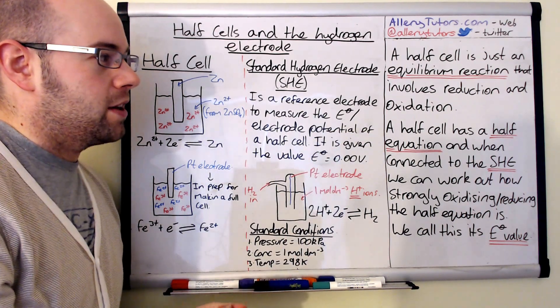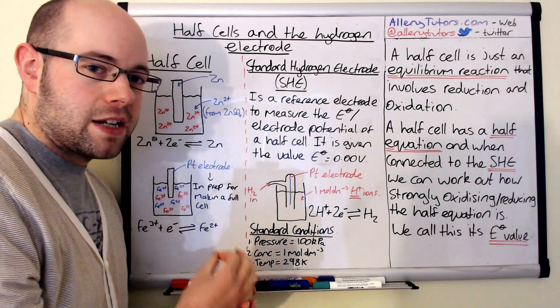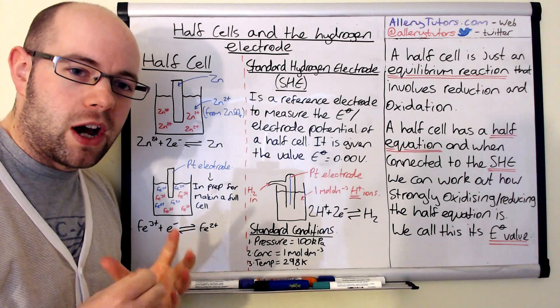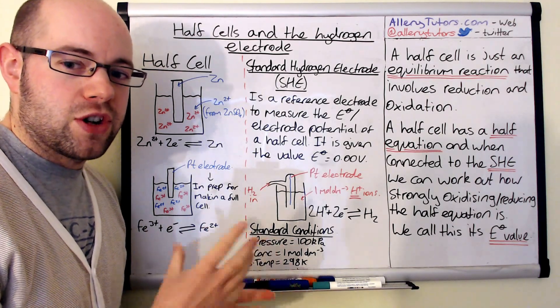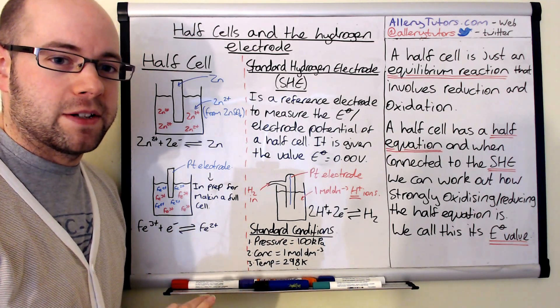Basically a half cell has a half equation. When it's connected to a standard hydrogen electrode, which I'll show you in a minute, we can work out how strongly oxidizing or reducing that actual half equation is. And we can give it what we call an E⁰ value, which I'll come on to in a minute as well.